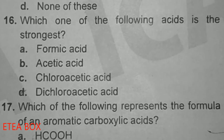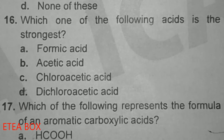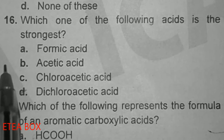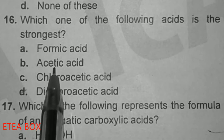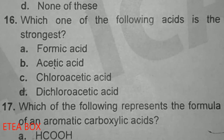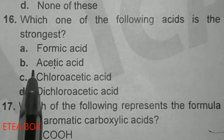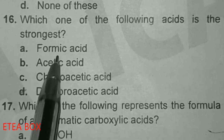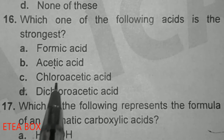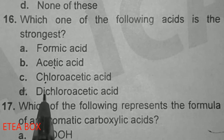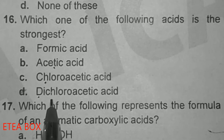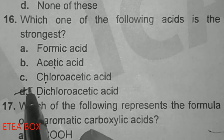Which of the following acid is the strongest? Greater the electron-withdrawing group, stronger will be the acid. Formic acid contains only hydrogen. Acetic acid has an electron-donating group — so it is weaker. Chloroacetate contains one electron-withdrawing group, making it stronger. But option B, dichloroacetate, has two electron-withdrawing groups — greater the electron-withdrawing group, stronger the acid. So option D (trichloroacetate) is correct as the strongest acid.